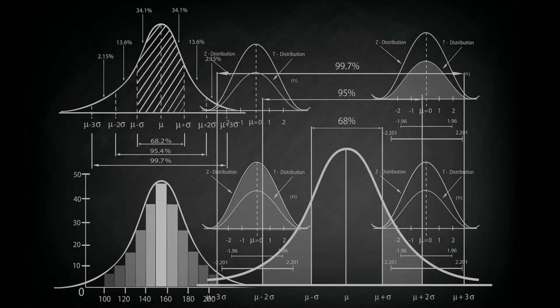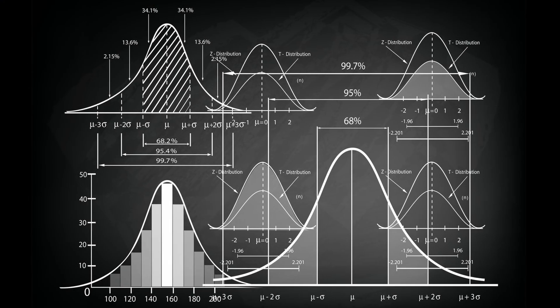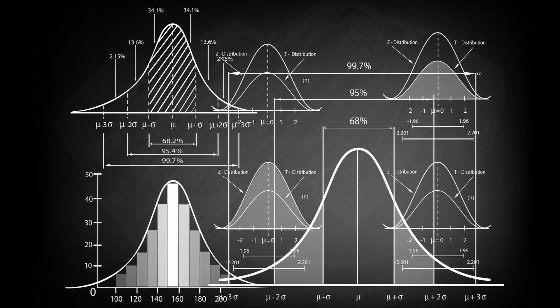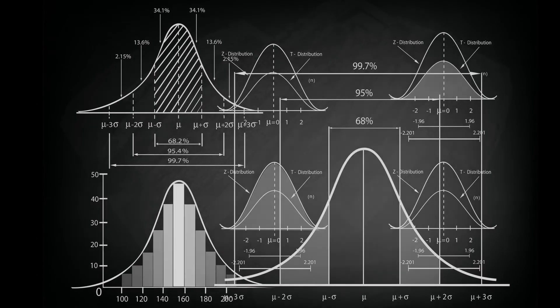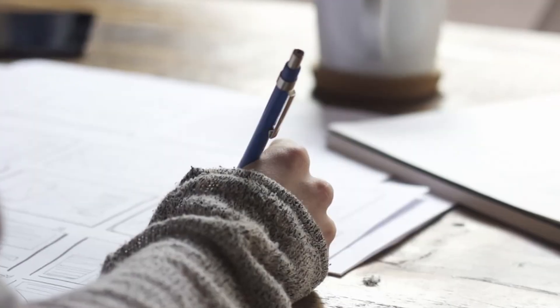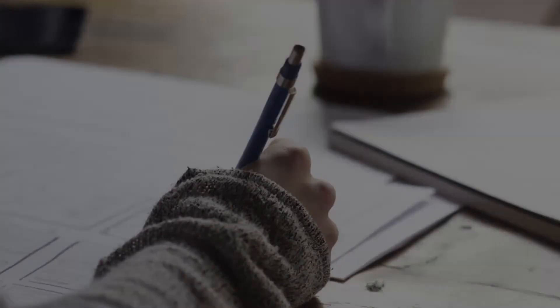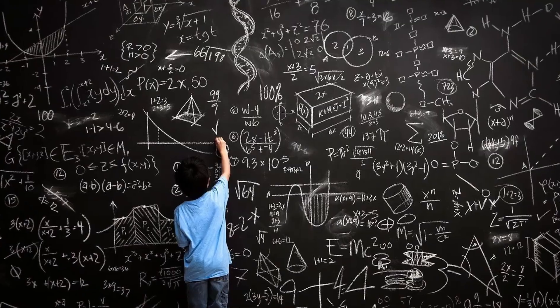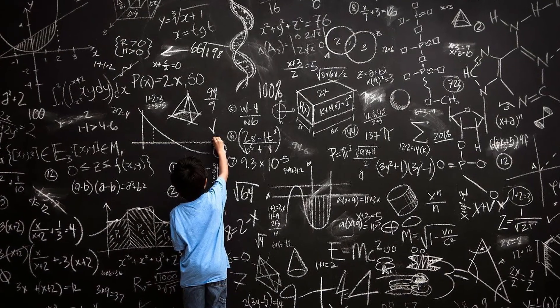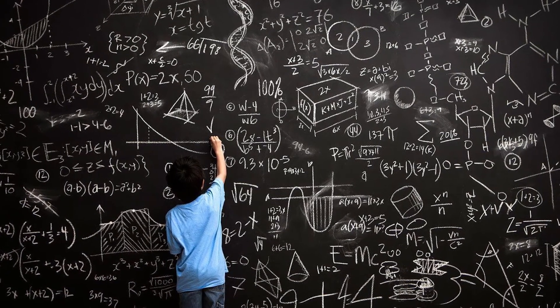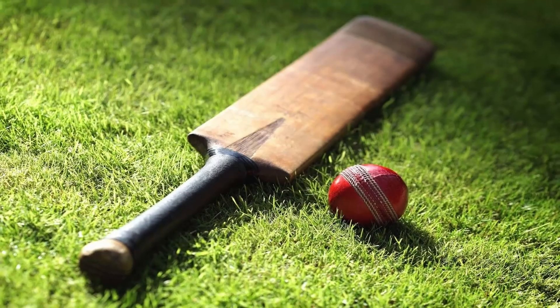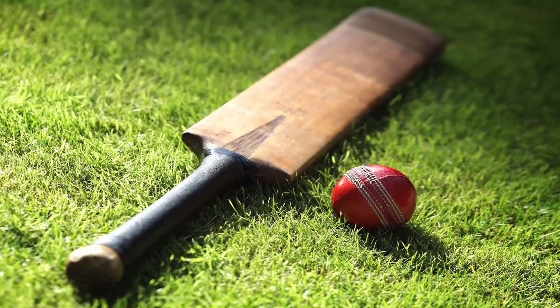The DL method uses results obtained from significant research in statistics along with realistic assumptions to arrive at the most appropriate calculations, forming a great example of the application of mathematics in diverse fields like sports.